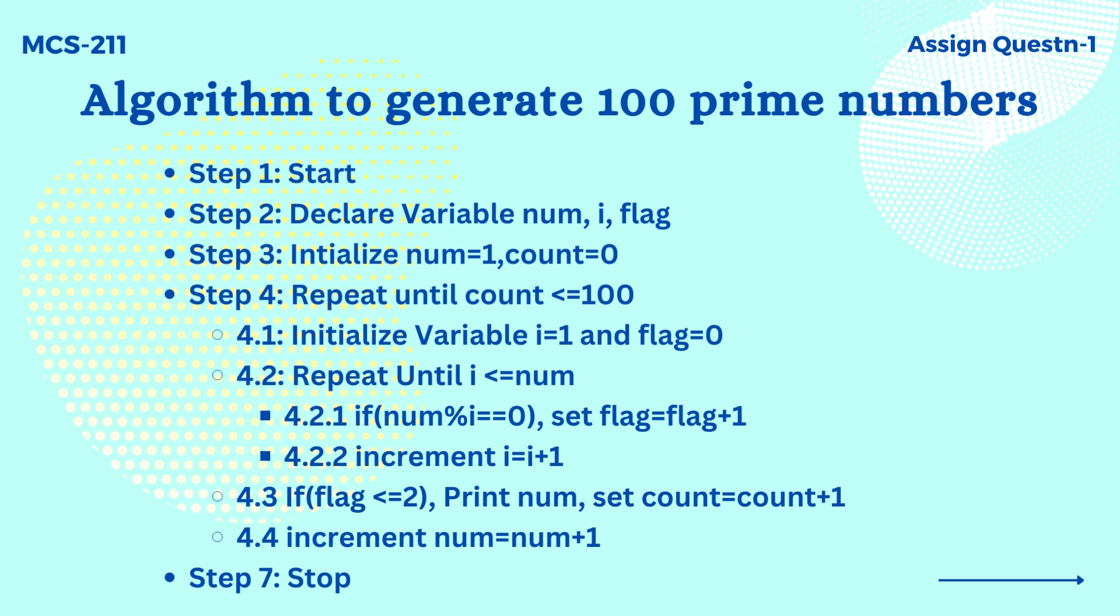Then we initialize two variables flag to 0 and i to 1. We then check if num is divisible by i, which takes up value till it reaches num. If divisible we increment flag by 1. We repeat the above step until num is greater than or equal to i.